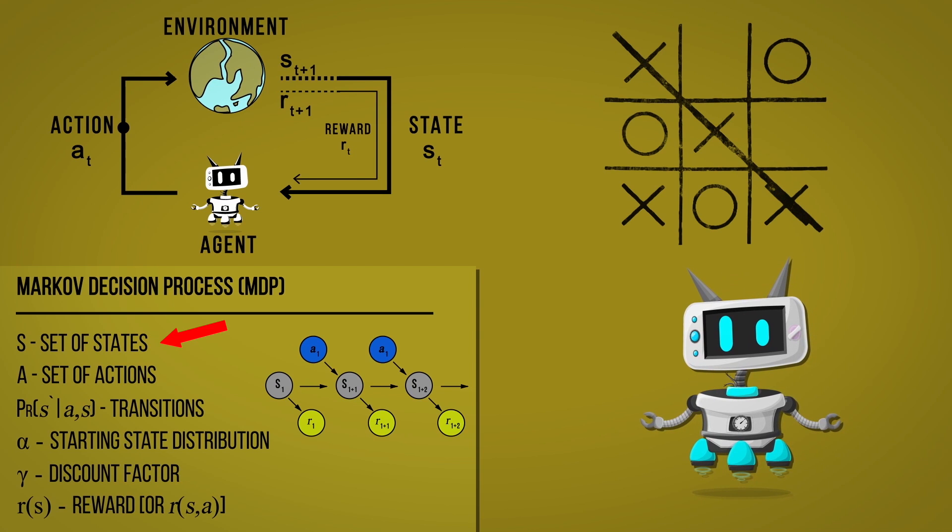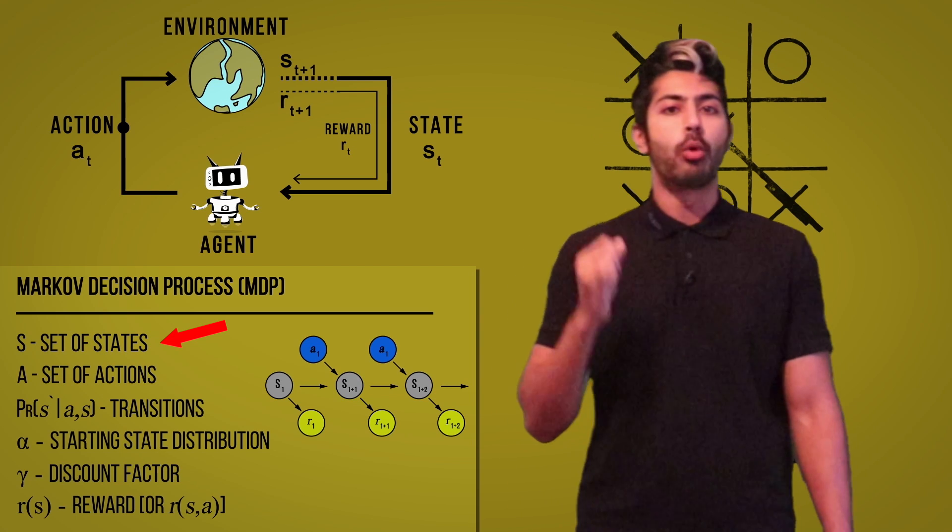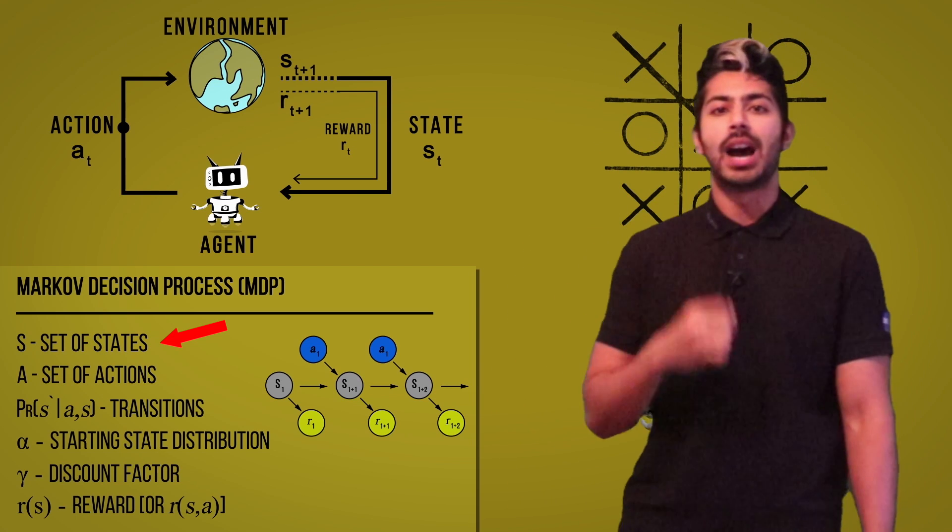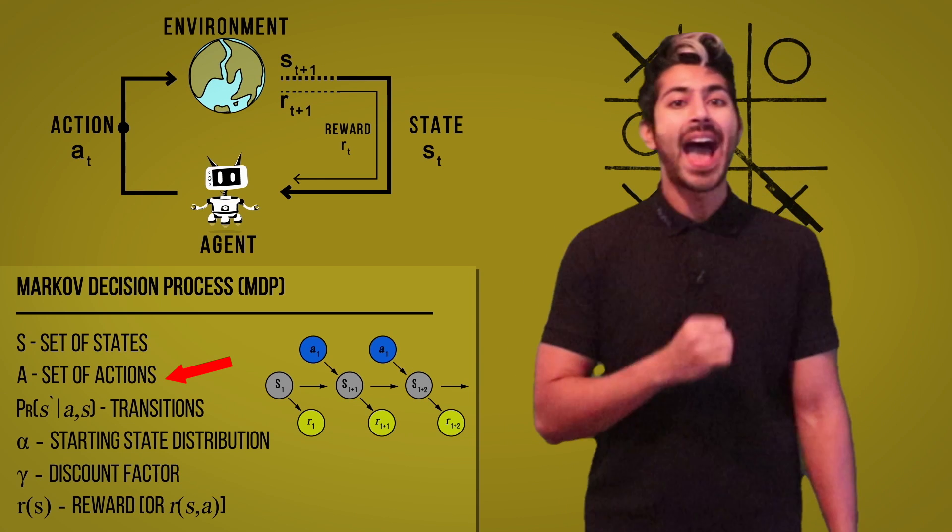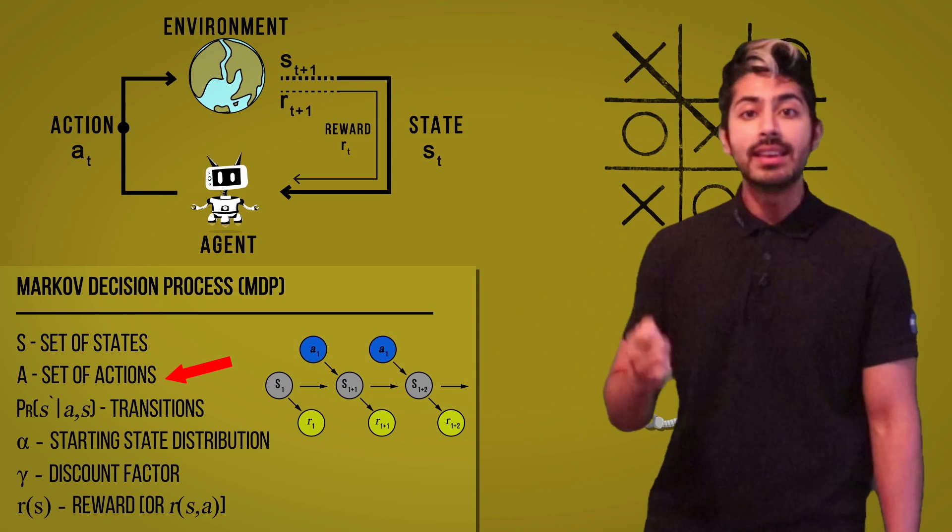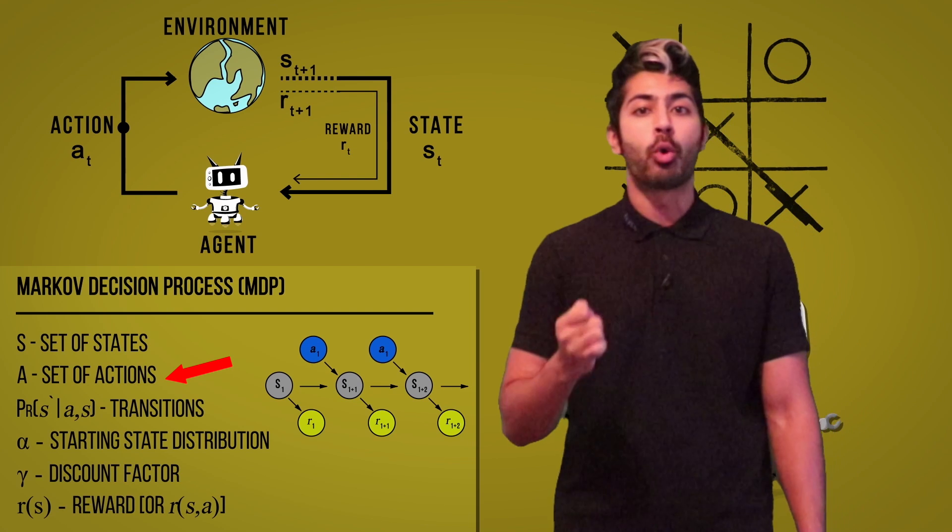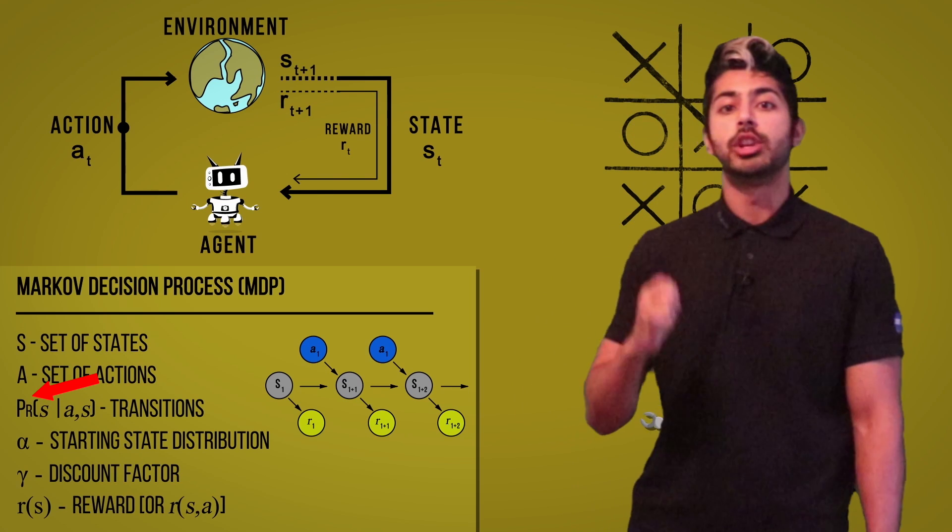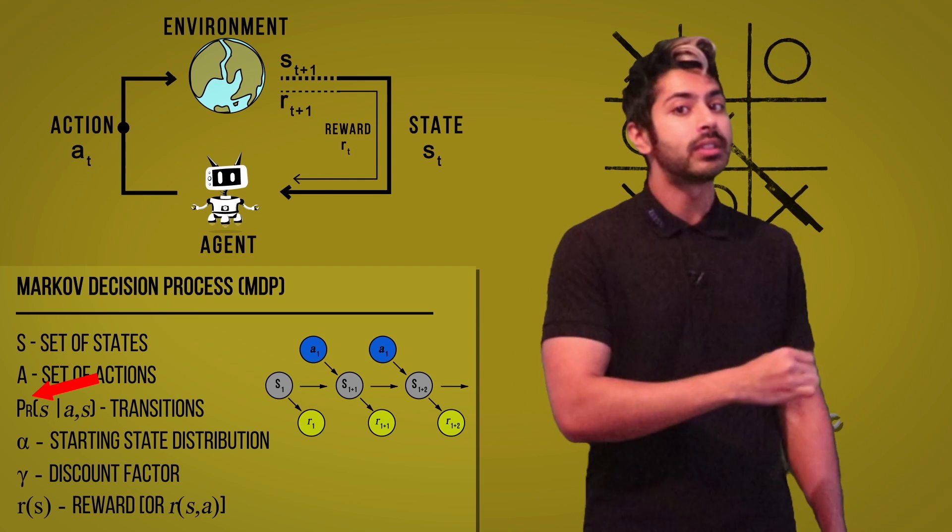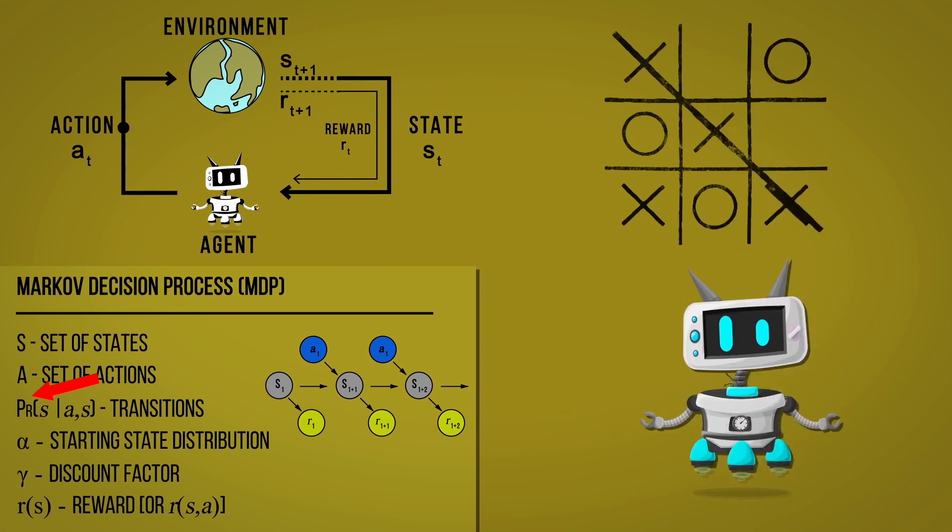We can use the variable S to define a set of game states. These are all the possible configurations the board can be in at any given time step during the game. We also have A, which is a set of actions that our agent can take. In this case, it would be the position on the board they'd like to place their X on. P represents the probability that a given action A in a given state S will lead to another state. It's a measure of how likely a board state will be a certain way after the agent plays a certain move.